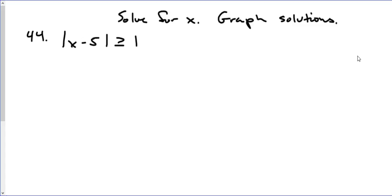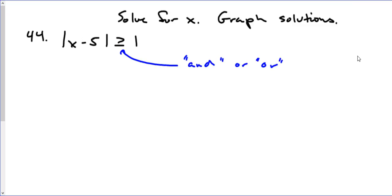When you solve any type of absolute value problem, the key thing is you certainly need to have two different equations. Now with inequalities, you're either going to have an AND statement or an OR statement.